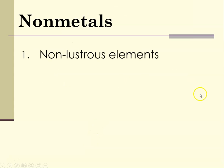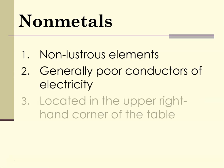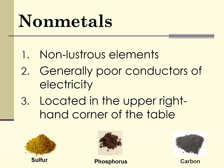The nonmetals are the nonlustrous elements and are generally poor conductors of electricity. They are located in the upper right-hand corner of the periodic table. Three examples are sulfur, phosphorus, and carbon.